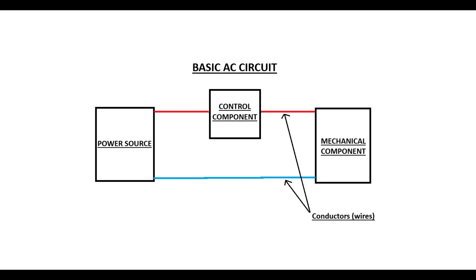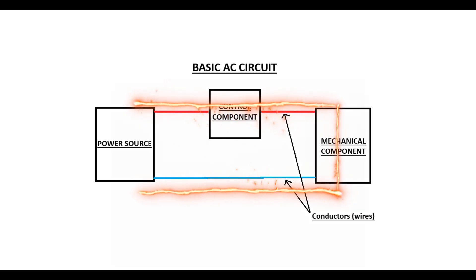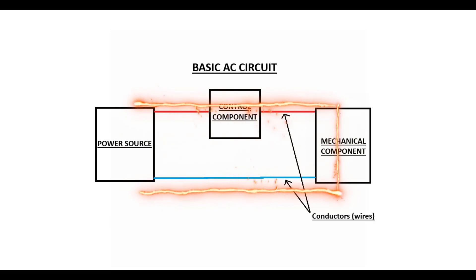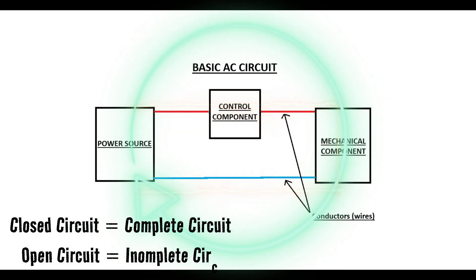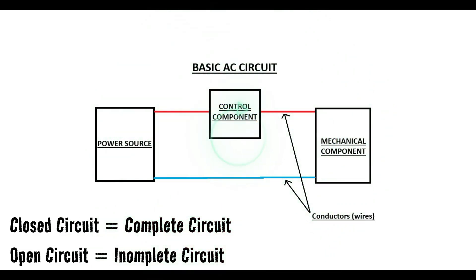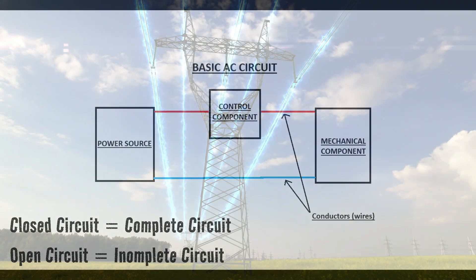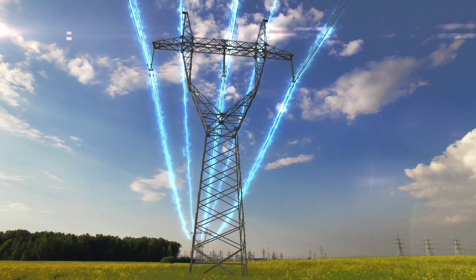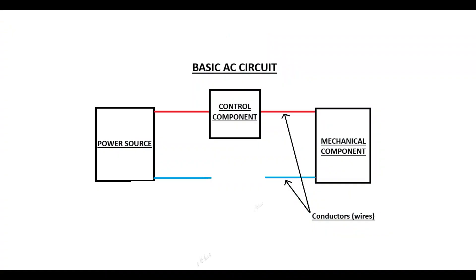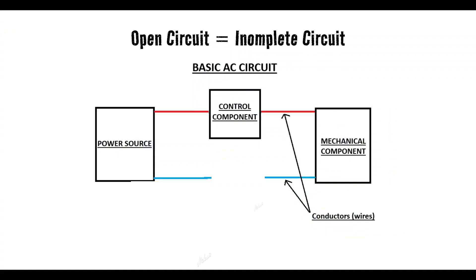The whole purpose of a circuit is to provide a path from the power source through the control components via wire, and eventually make its way back to the power source again. So what we're talking about here is a full circle — a path for electricity to travel around the entire circuit and back where it started. A complete circuit allows electricity to move; if we don't have a complete circuit, electricity cannot move.